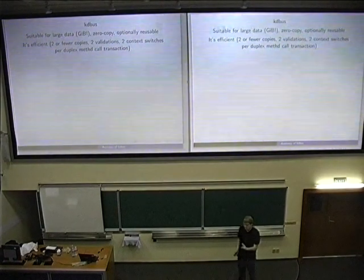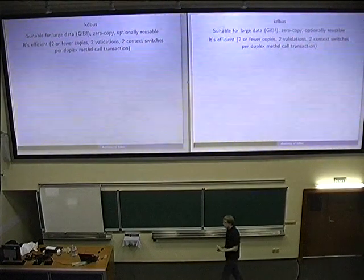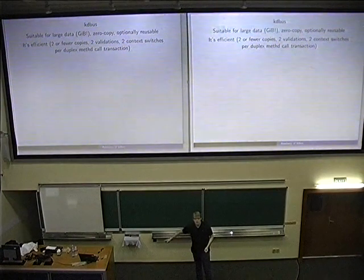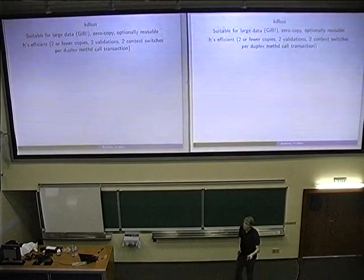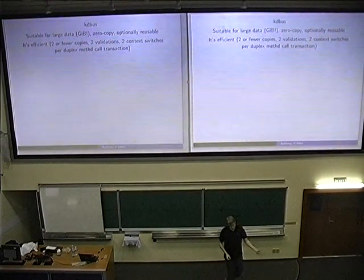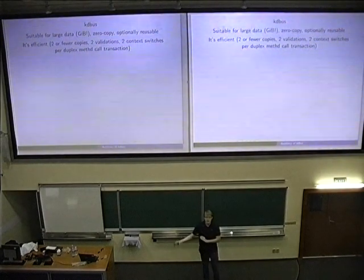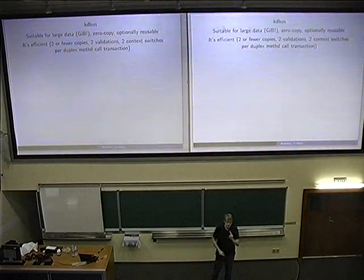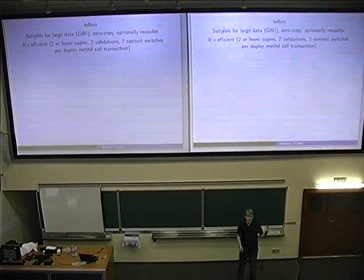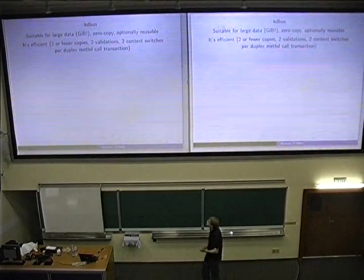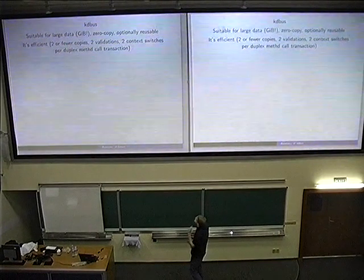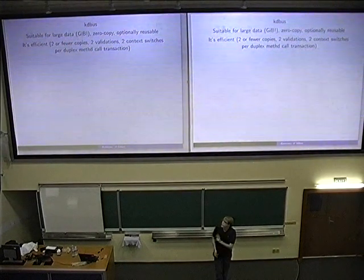There are two validations, not four anymore — the other side validates the incoming message and we validate the reply. So two validations and two context switches: one to the other side and one back. To summarize: classic dbus-daemon was ten copies, four validations, four context switches. We are at two or better — two copies and two context switches.